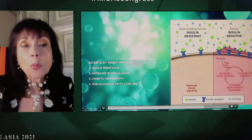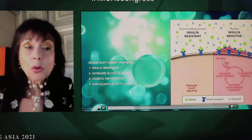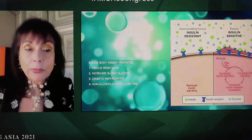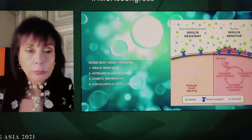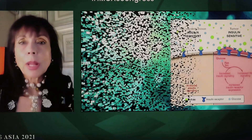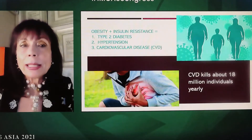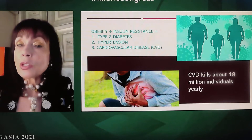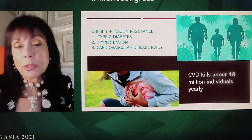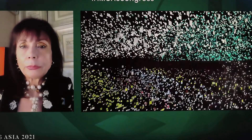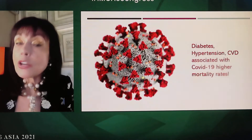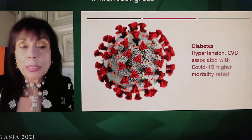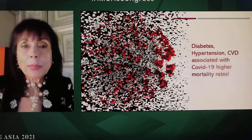Excess body weight promotes insulin resistance, increases blood glucose, diabetic nephropathy and neuropathy, and non-alcoholic fatty liver. Obesity plus insulin resistance creates type 2 diabetes, hypertension, and cardiovascular disease. Cardiovascular disease kills about 1,000,000 individuals yearly. Diabetes and hypertension are associated with very high COVID-19 mortality rates.